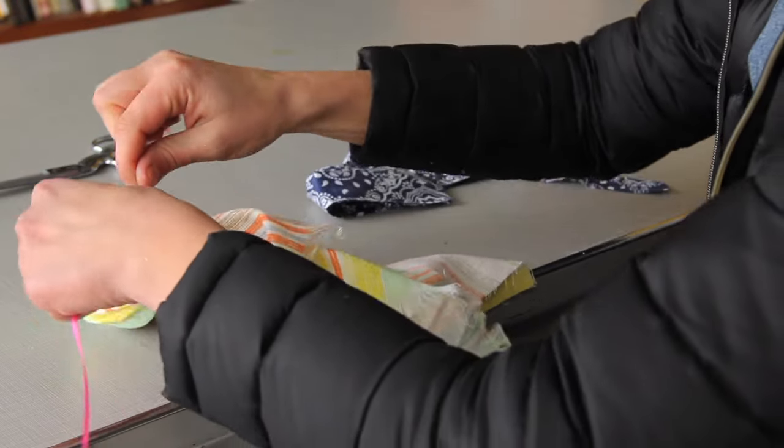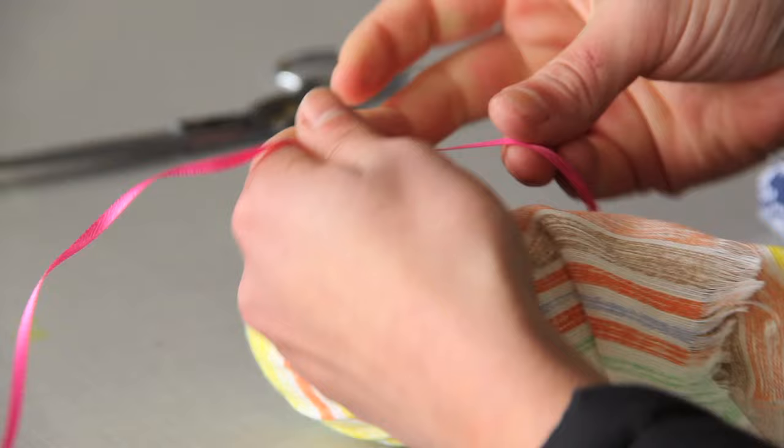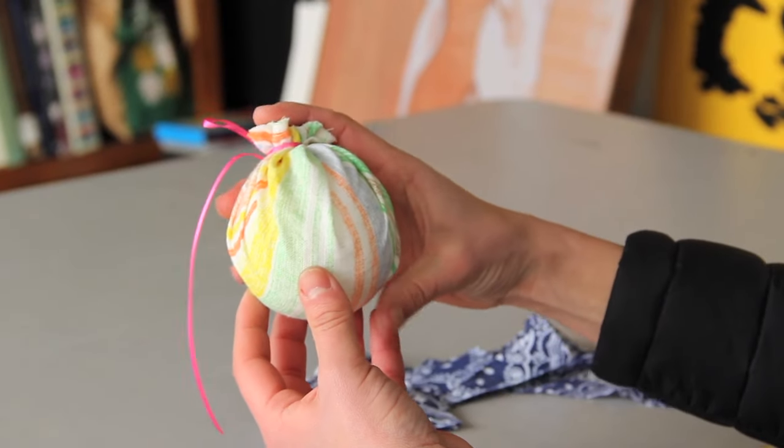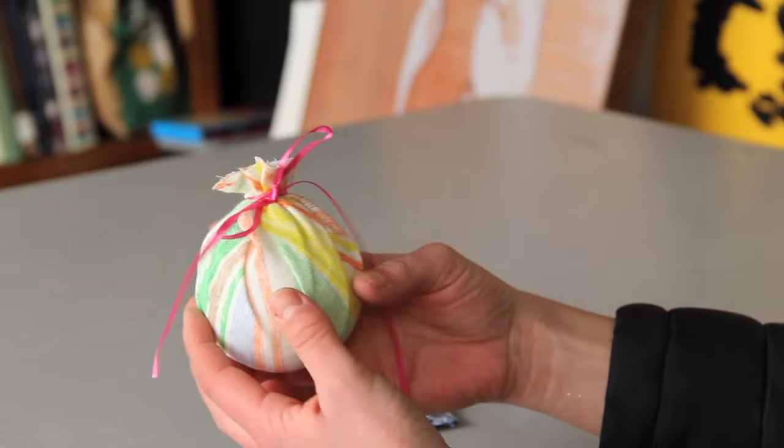So you're going to want to tie this super tight. There you go, you have fitted some fabric around the styrofoam ball, around a round object.